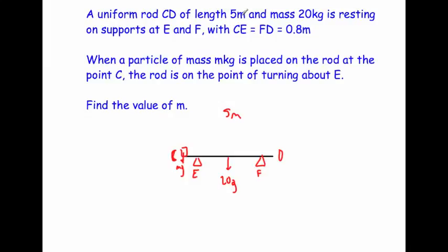A uniform rod CD of length 5 metres has a mass of 20 kilograms. Because it's a uniform rod, the mass acts in the centre, and the weight is 20g acting at the centre.